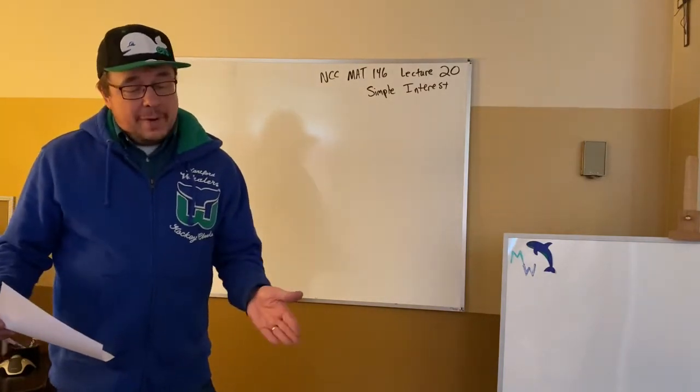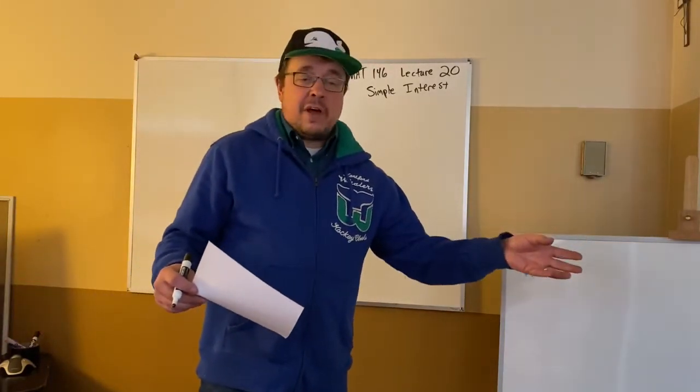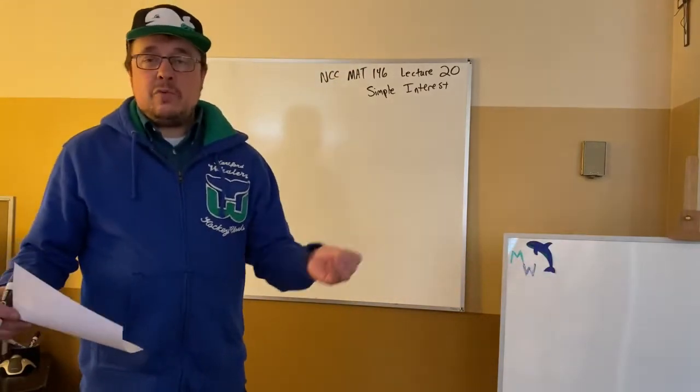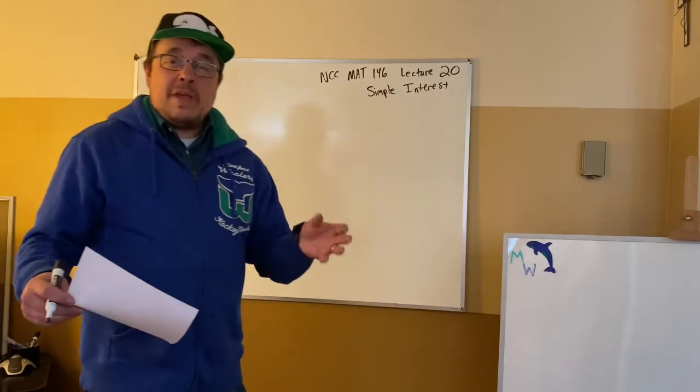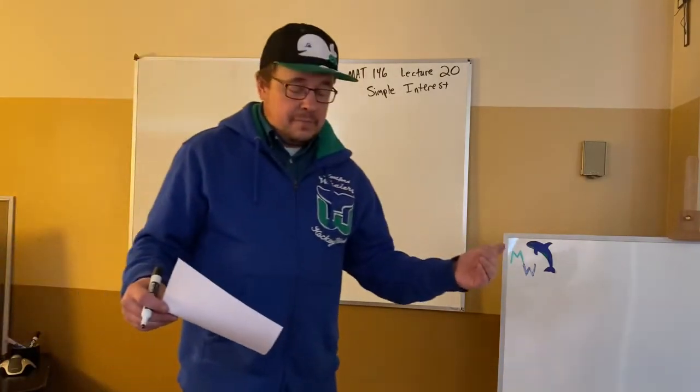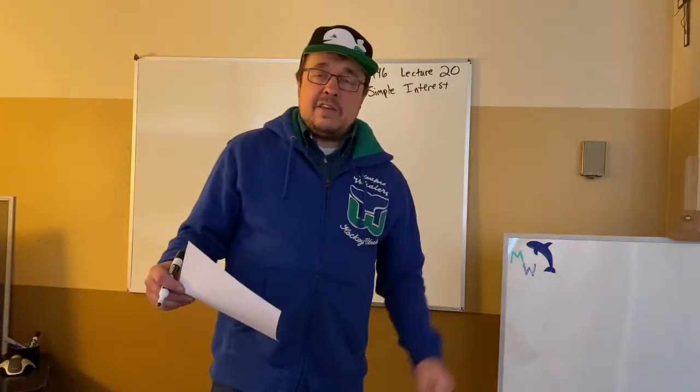When you go and buy a bond, what happens is you loan the company your money. You loan them your $1,000. If it's a 10% annual bond that's going to go over 10 years, they're going to pay you 10% of the $1,000 every single year. So first year you get $100, next year you get $100, next year you get $100, until 10 years is up.